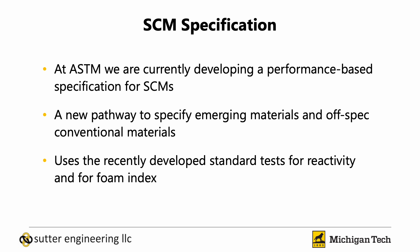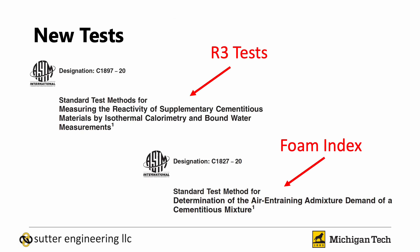This specification is intended to be a pathway for emerging materials to be specified, but also a way to specify off-spec conventional materials. It's going to incorporate the recently developed R3 test for measuring reactivity — C1897 — as well as the foam index test — C1827 — which has recently been standardized. Both of these tests were adopted in 2020.